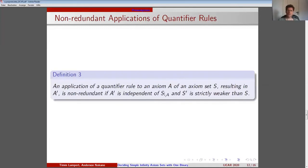An application of a quantifier rule to an axiom A of an axiom set S resulting in A' is non-redundant if A' is independent of S without A and S' is strictly weaker than S. To generate a new superpostulate S' from S, we complete S without A by non-A plus the set A' of all alternative non-redundant applications of our quantifier rules to axiom A.